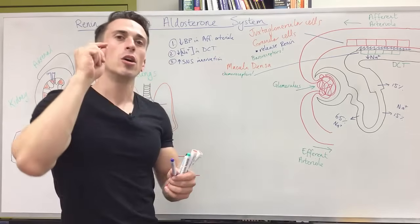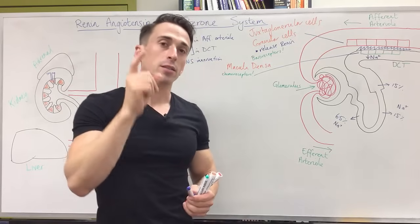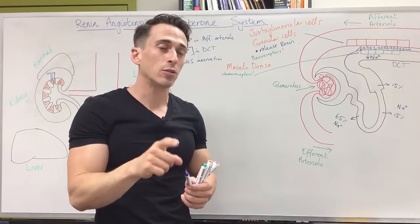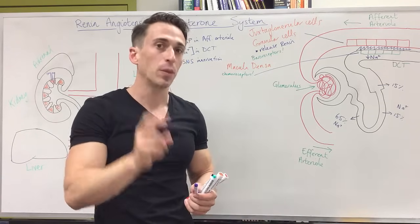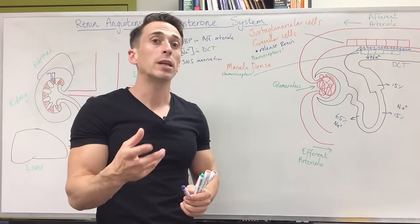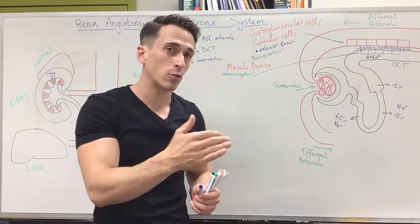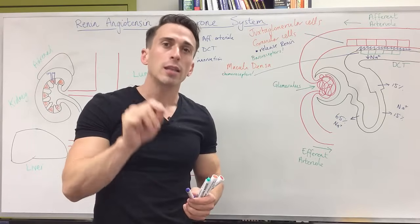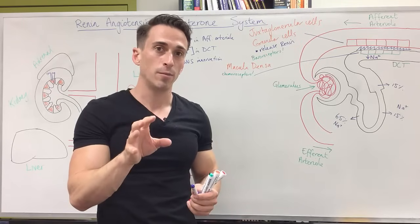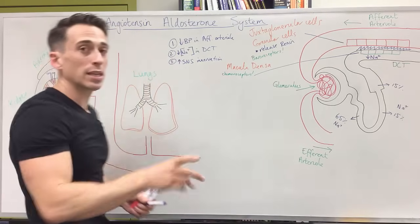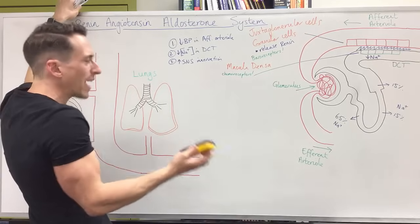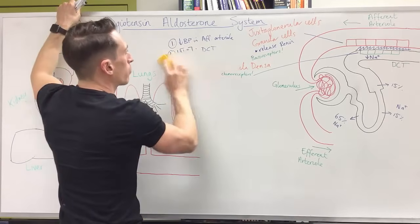To summarize, three things trigger the release of renin. One: a drop in blood pressure, which directly triggers the granular cells in the afferent arteriole to release renin. Two: a drop in sodium concentration in the distal convoluted tubule, picked up by the macula densa cells, which then signal the granular cells to release renin. Three: the sympathetic nervous system directly innervates the granular cells to release renin. Now we need to talk about how the rest of the system works to increase blood volume and blood pressure.